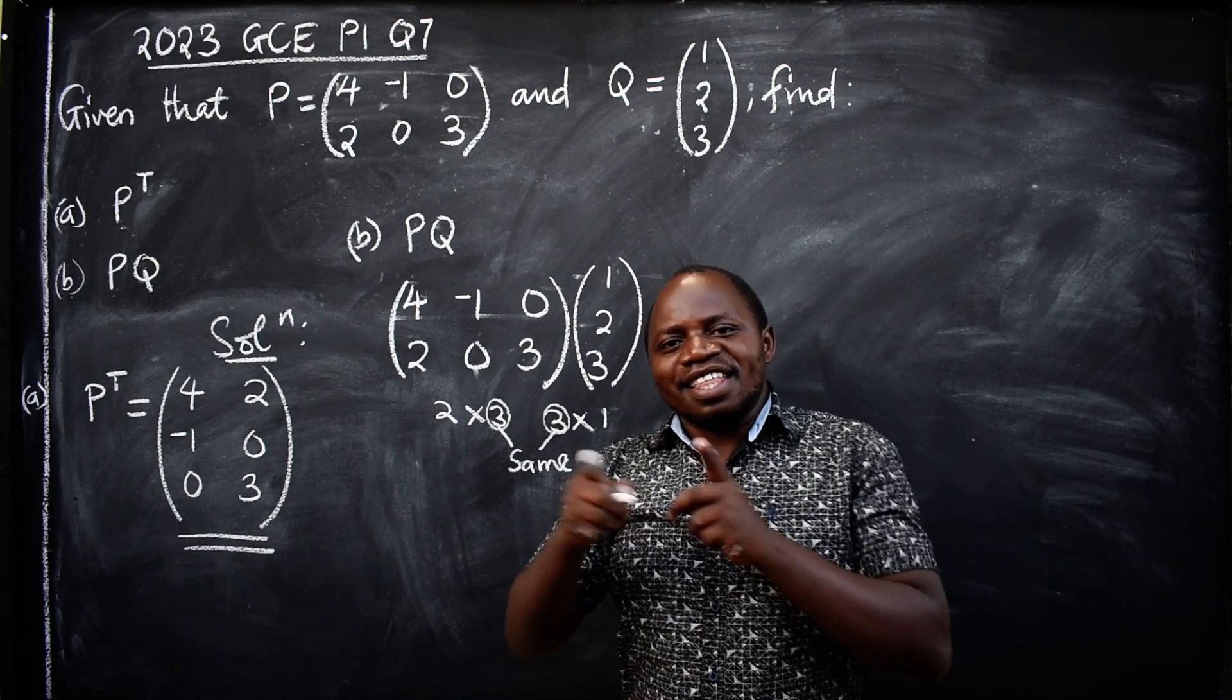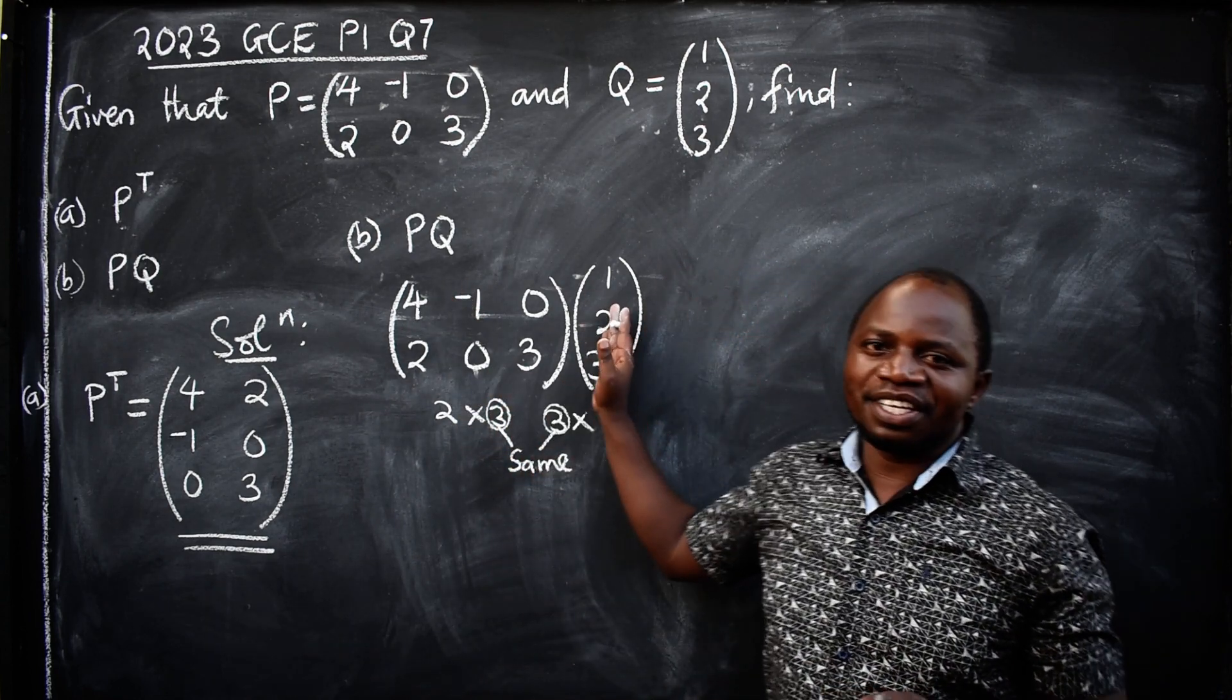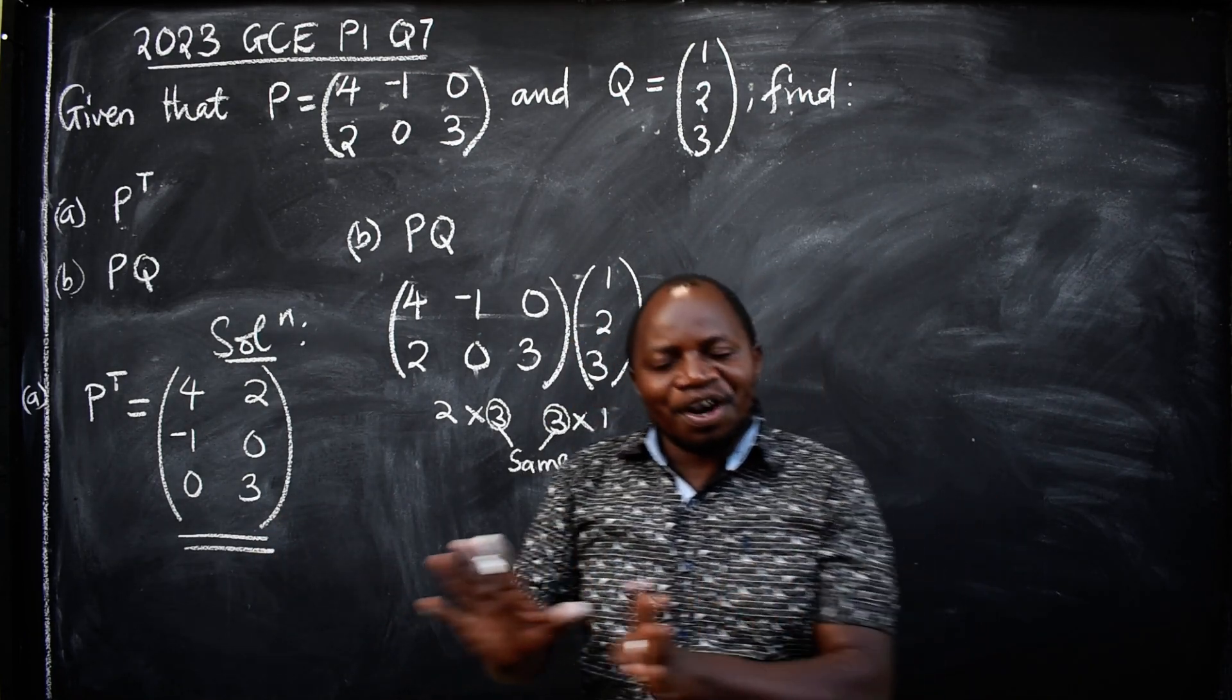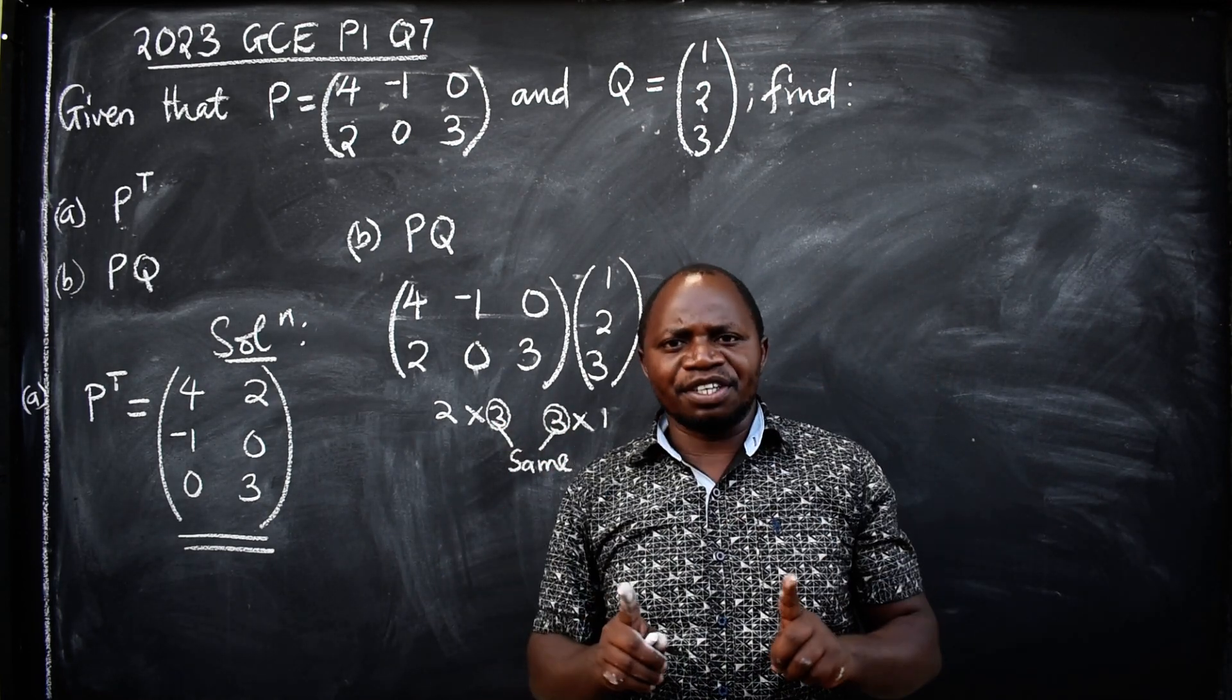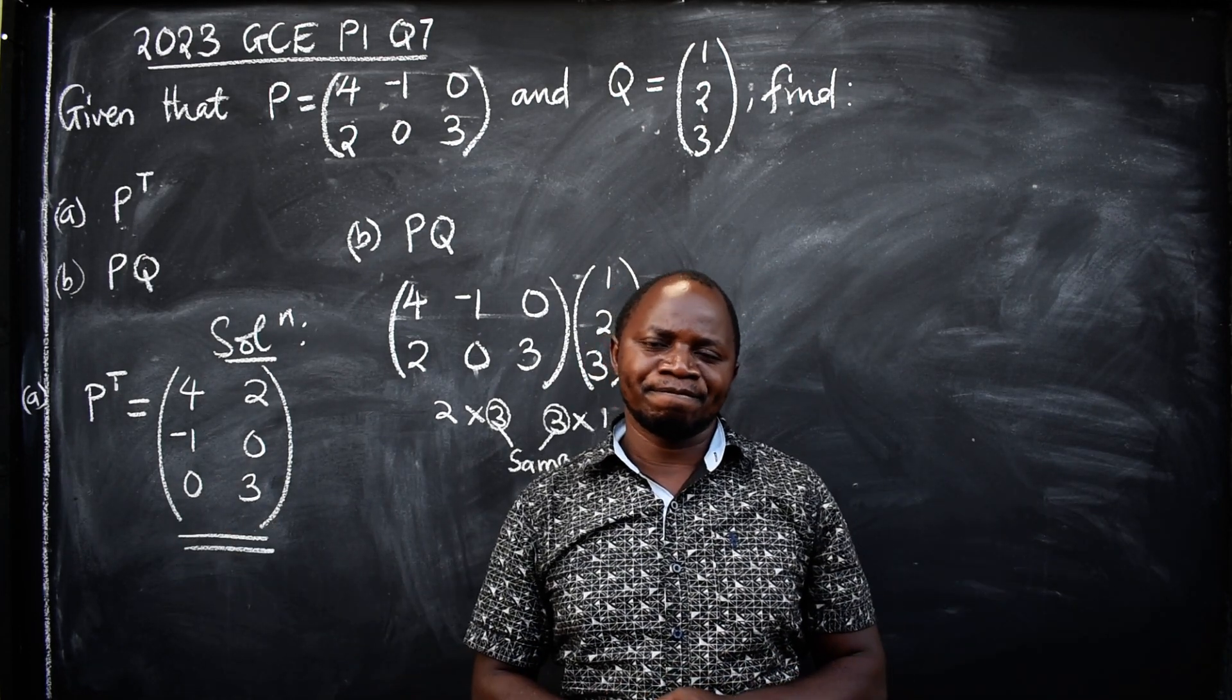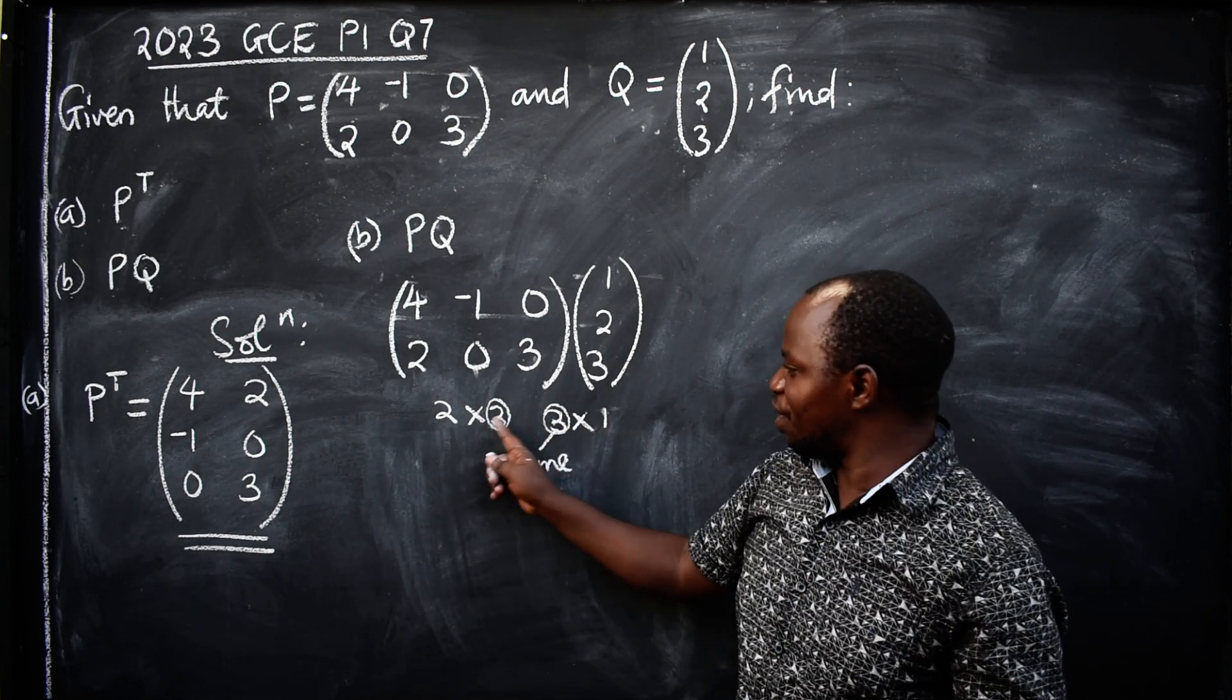So this and this must be the same. If they are the same, they are telling you to say the two matrices can be multiplied. You can go ahead and multiply. If these two are not the same, if they are different, don't even try to multiply, they cannot be multiplied.